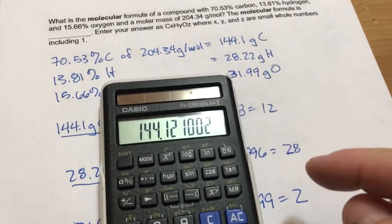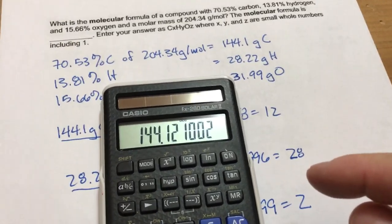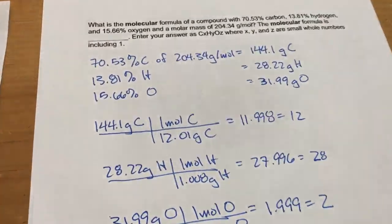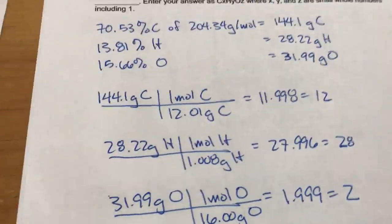I get 144.1, etc. I'm deciding to keep four sig figs for this case, and that's okay too.